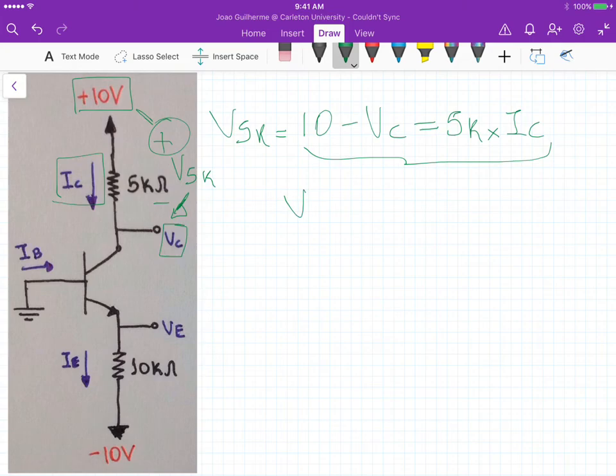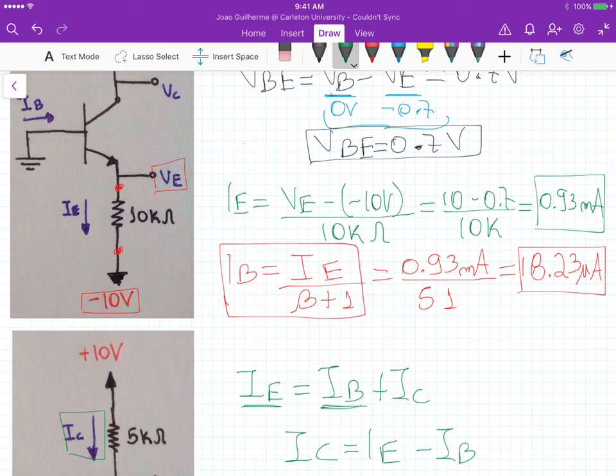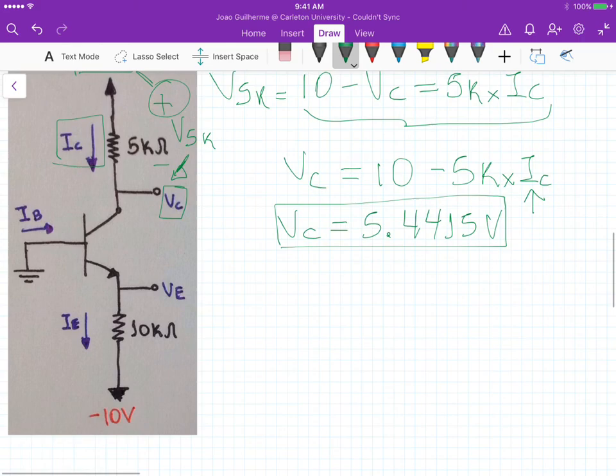From this configuration here, we can isolate VC, so VC is equals to 10 minus 5K times IC, and if we plug in the value of IC here, VC becomes equals to 5.4415 volts. So now we have found the values of the current IE, IB, IC, and VC.